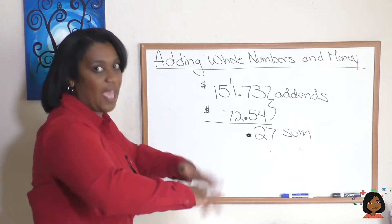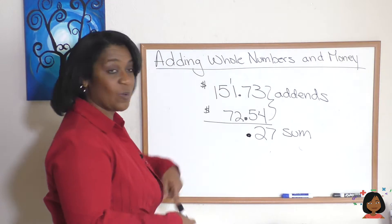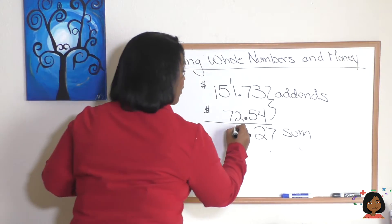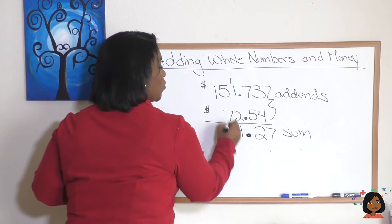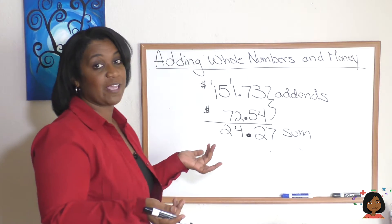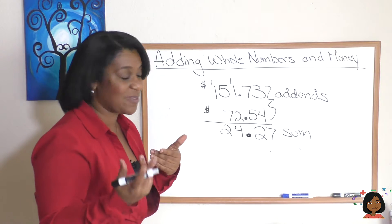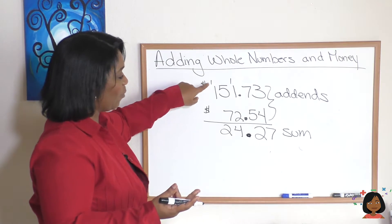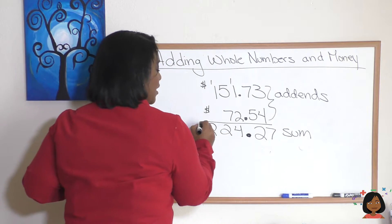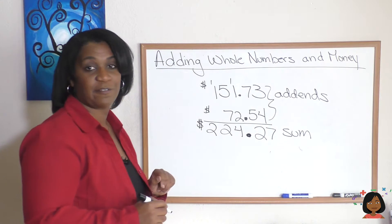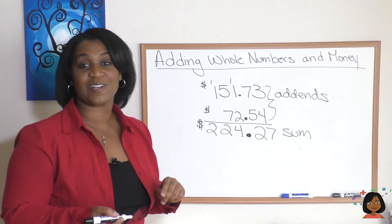Again, they are lined up and keep it going: 1 plus 1 is 2, 2 plus 2 is 4, 7 and 5 is 12. And you see that I've been carrying the 1 anytime I get over a number with 10. And lastly, my 1 plus 1 is 2. Add my dollar sign onto the front: we have $224.27.